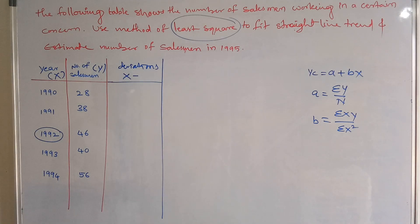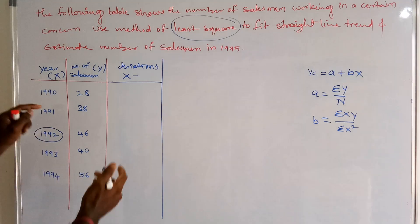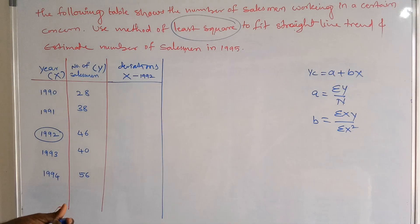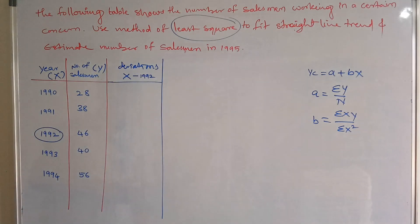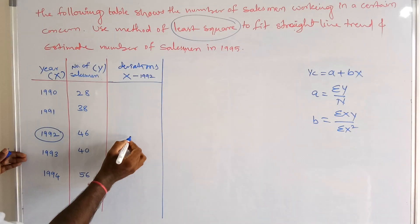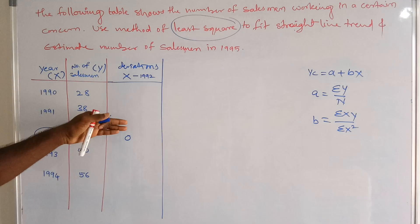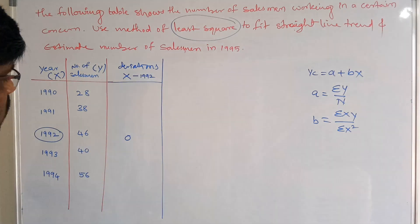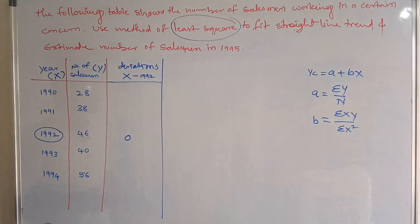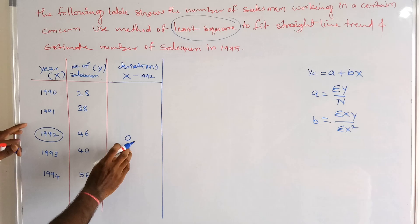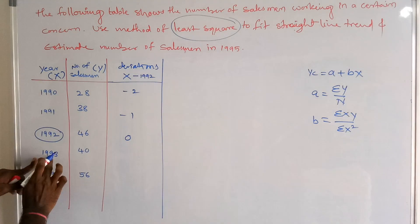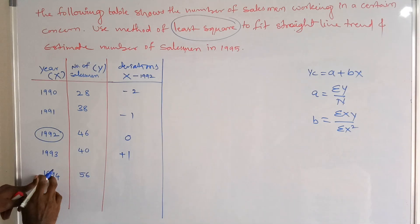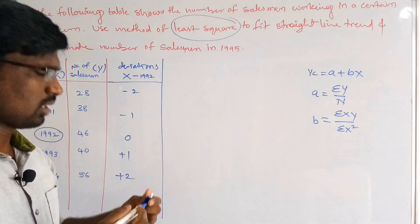Since 1992 is the midyear, the x deviations are calculated as: x minus 1992. So 1990 minus 1992 = -2, 1991 minus 1992 = -1, 1992 minus 1992 = 0, 1993 minus 1992 = +1, and 1994 minus 1992 = +2.